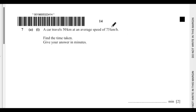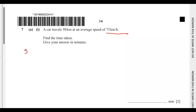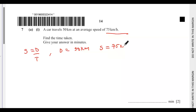Find the time taken — give your answer in minutes. You need to watch out for the unit. We know that speed equals distance over time. In this case, the distance is 50 kilometers, and the speed is 75 kilometers per hour.